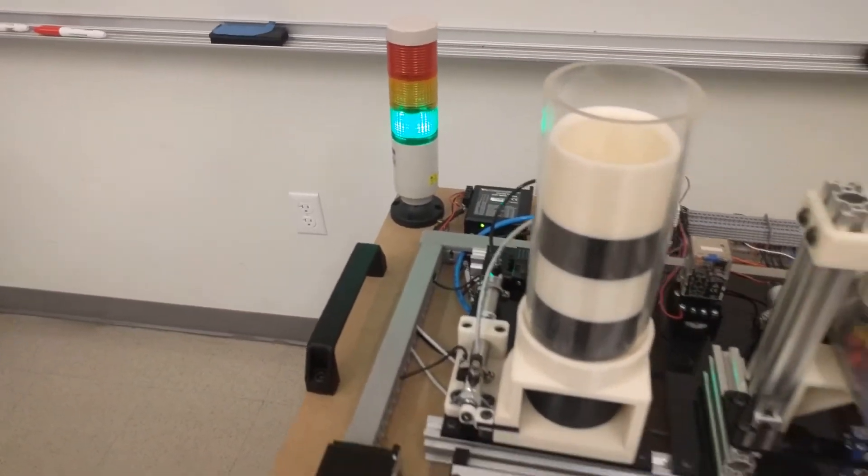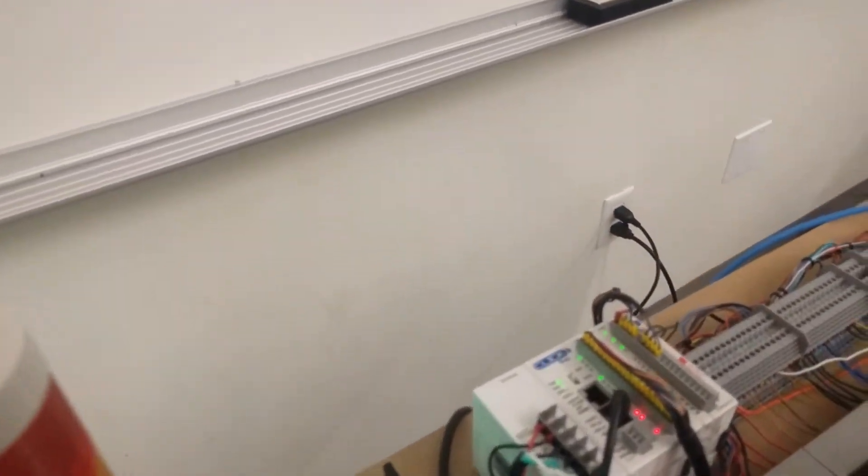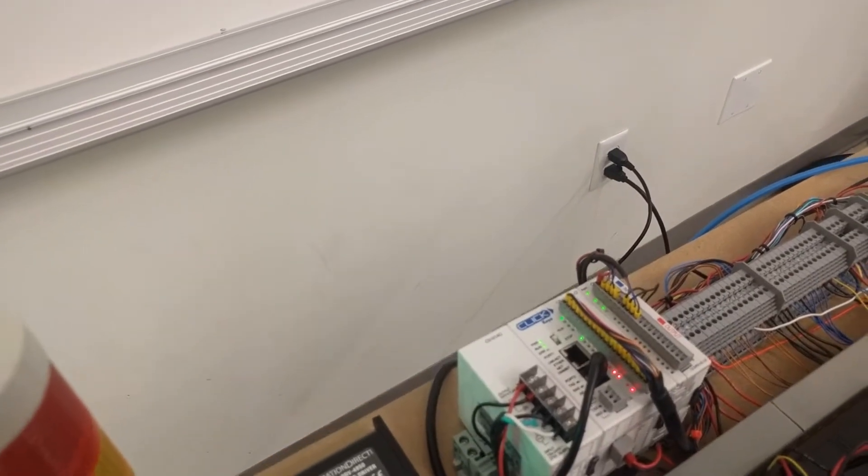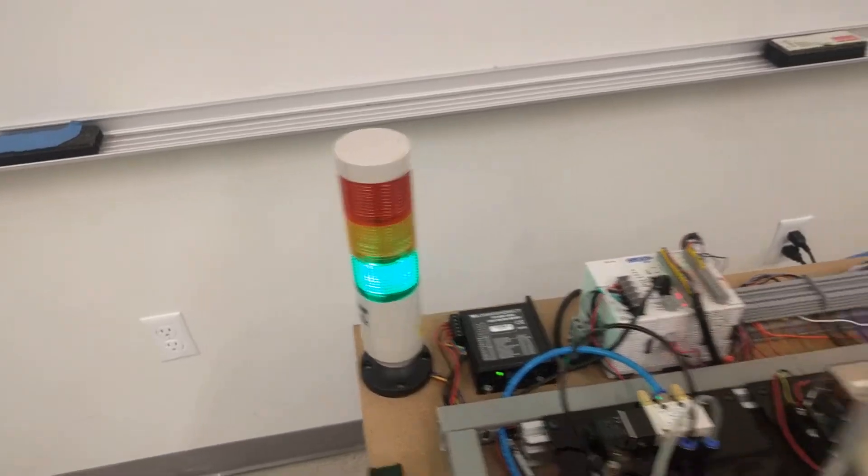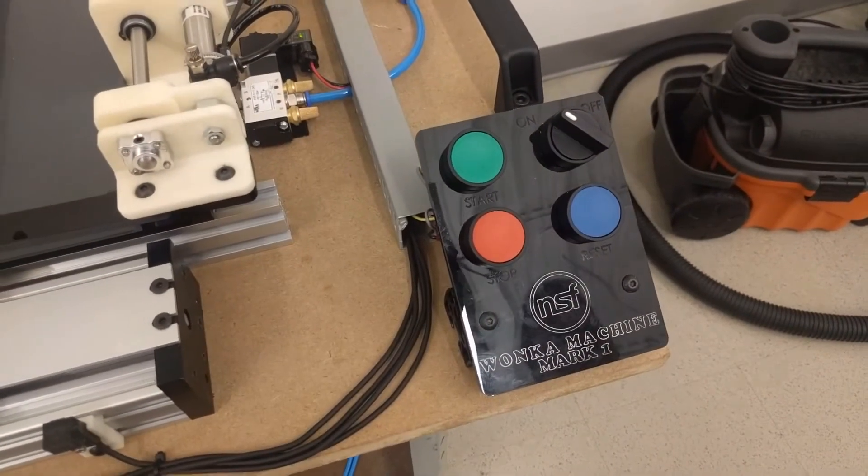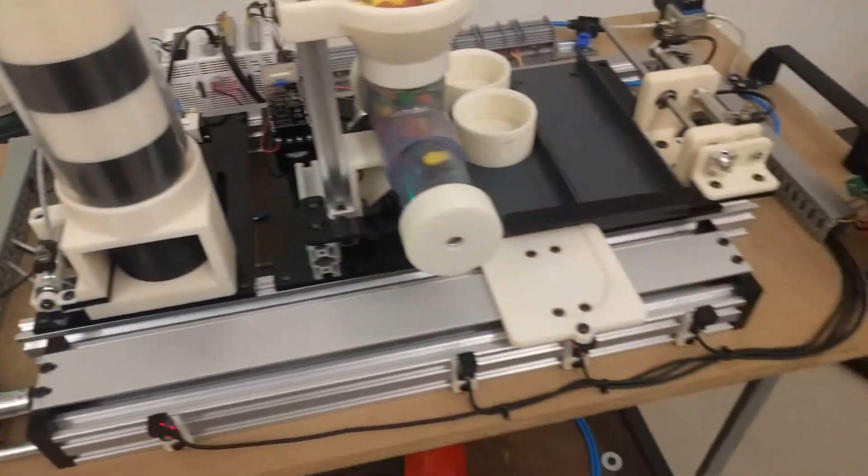The other thing you can do is you don't have to build all this at once. You could start off with the PLC, the CLICK PLC. The software is free. You could buy yourself a light tower that's made by Wolf Automation. And then you could have push buttons.